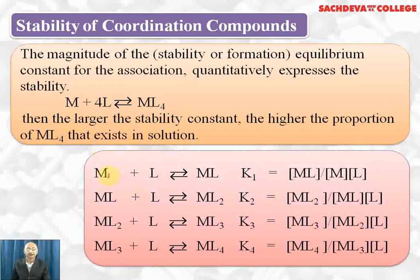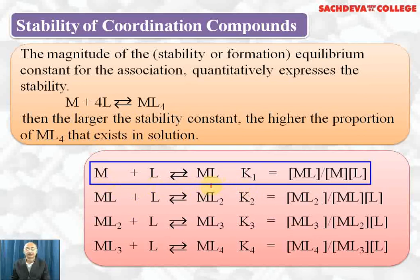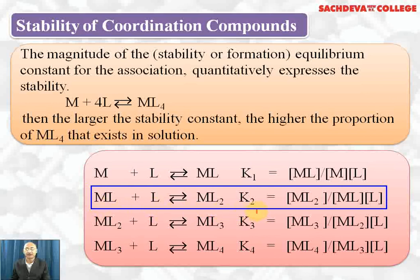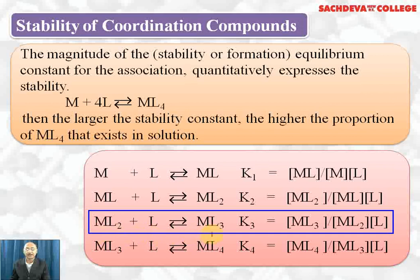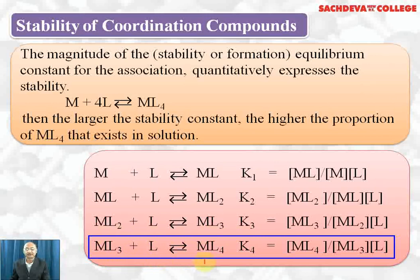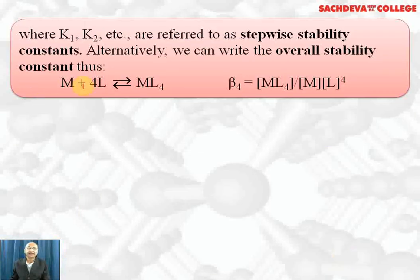The stepwise formation of a complex is shown as follows: a metal ion reacts with a ligand to form ML, and k₁ = [ML] / [M][L]. A second ligand joins to form ML₂, and k₂ = [ML₂] / [ML][L]. In the third step, ML₂ takes one more ligand to form ML₃, represented by k₃. In the fourth step, ML₃ reacts with one more ligand to form ML₄, represented by k₄. These k₁, k₂, k₃, k₄ are referred to as stepwise stability constants.